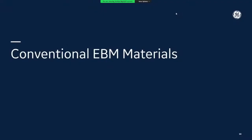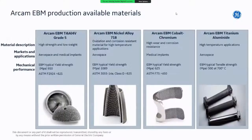I'd like to mention the materials available as production materials today in GE Additive and Arcam EBM systems. Production materials are validated with guaranteed material properties from the machine. The bread and butter here is titanium 64 — titanium grade 5 or 23 — a titanium-based material used for both aerospace and medical applications, which was actually the main driver of additive manufacturing from the beginning.